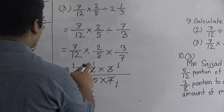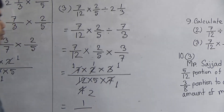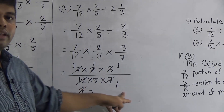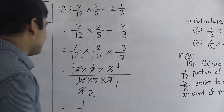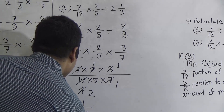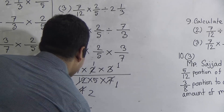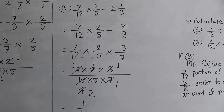We multiply numerator with numerators and denominator with denominators to get the answer. 1 × 1 × 1 = 1 as the numerator, and 2 × 5 × 1 = 10. So 1 by 10 is the required answer. Dear student, do you notice an interesting matter? Both question 2 and question 3 have the same answer, which is 1 by 10. So question number 9 is done.